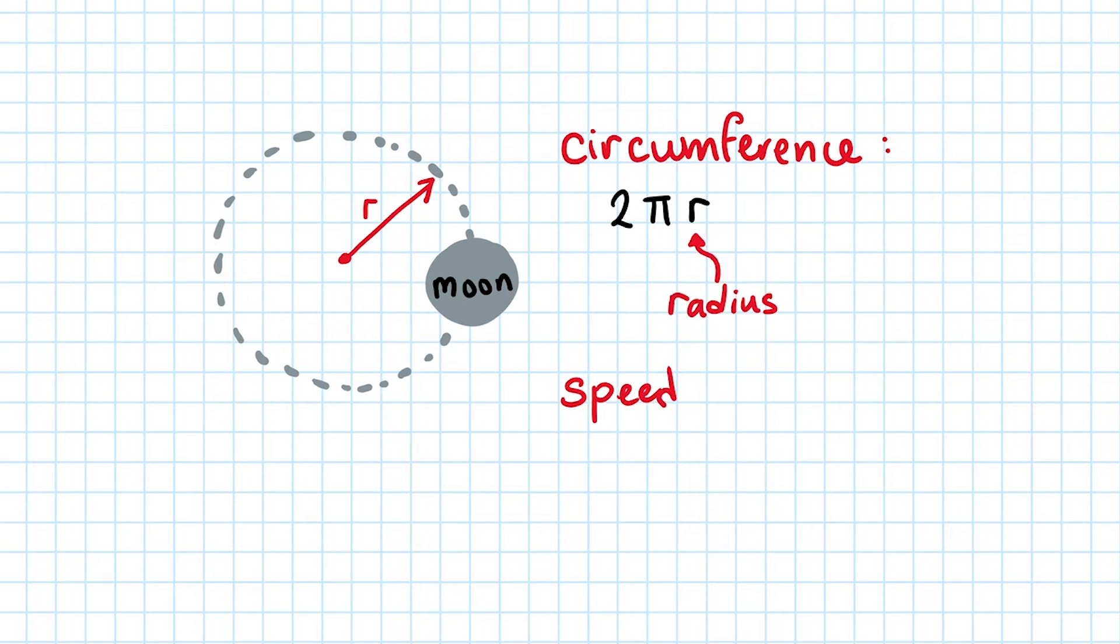And remember this basic equation: speed is distance over time. We can apply this to astronomy to find the orbital velocity. The orbital velocity can tell us, for example, how quickly the Moon is traveling around the Earth.